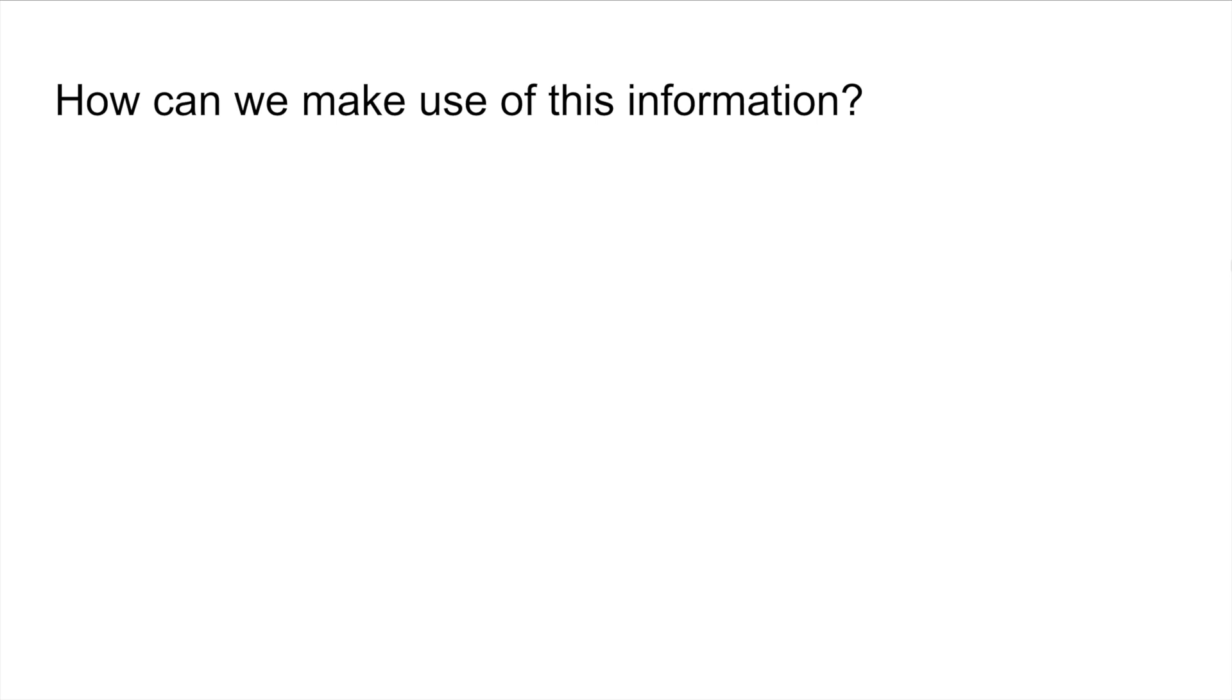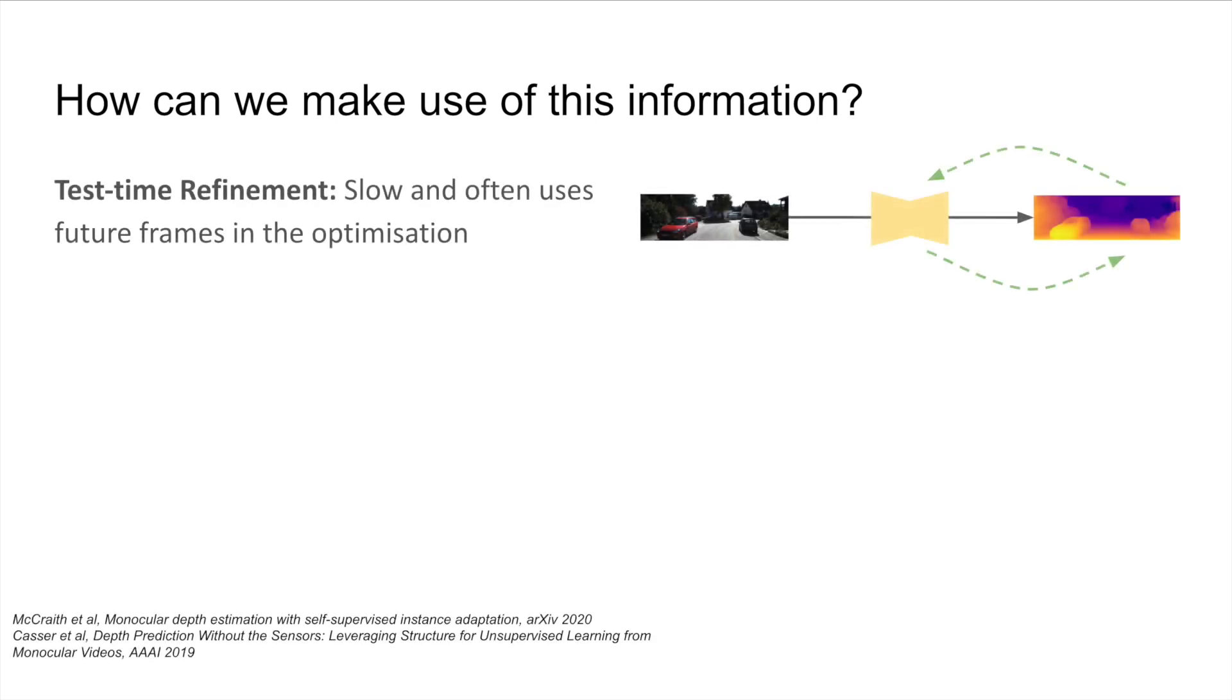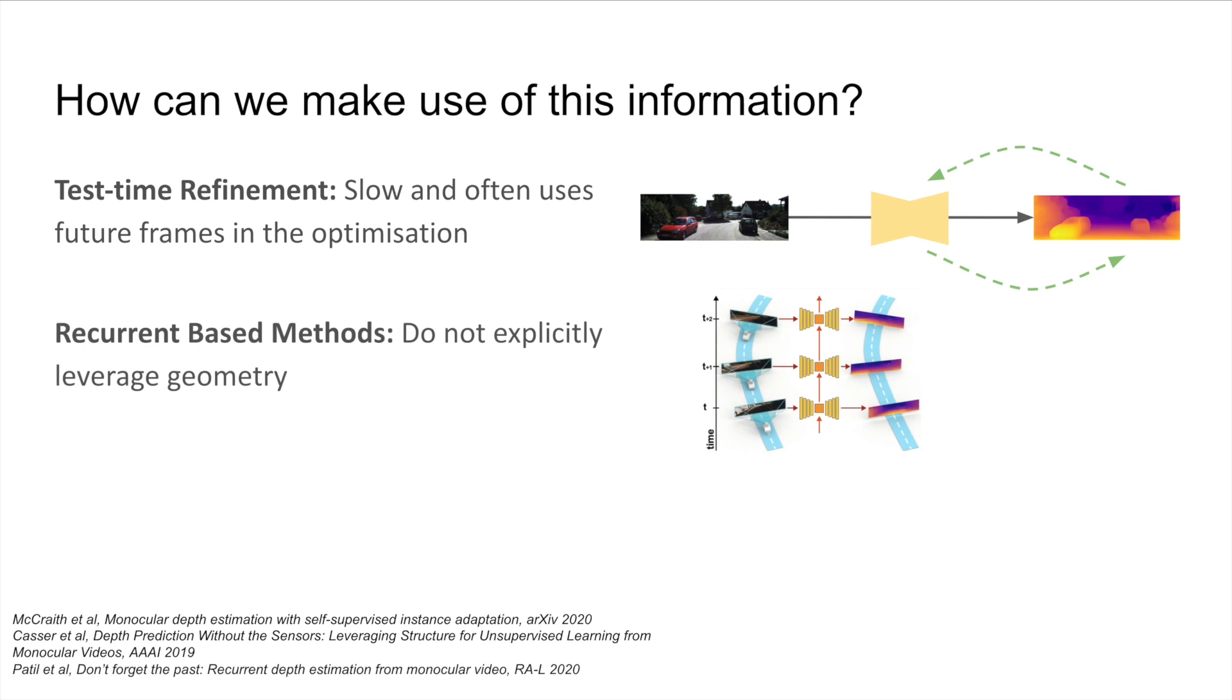Some previous methods have made use of test time refinement, whereby they perform back-propagation at test time to update the weights of a network. This can be slow, and often makes use of future frames in the optimization. Alternatively, methods have been proposed that utilize LSTM-based recurrent networks to leverage the additional information from multiple images. However, these do not explicitly make use of geometry.